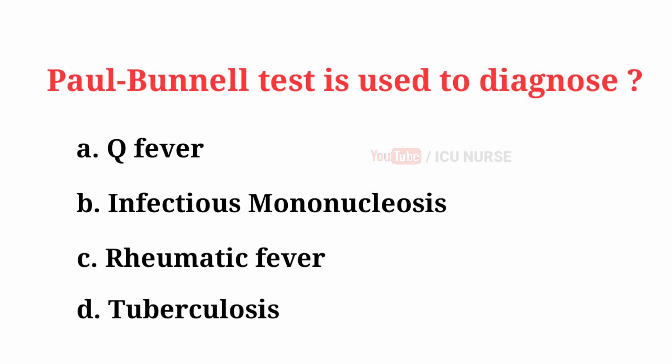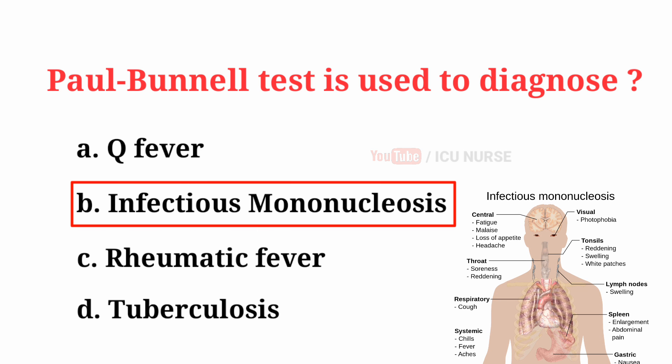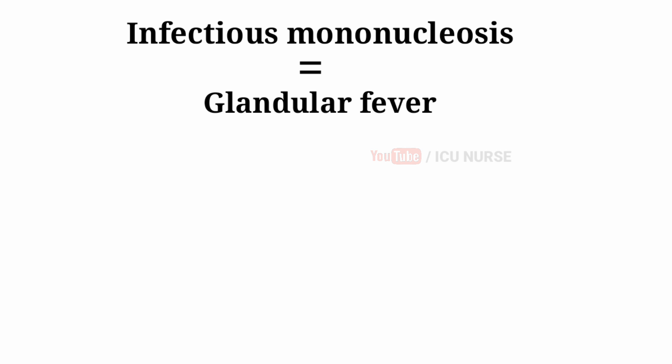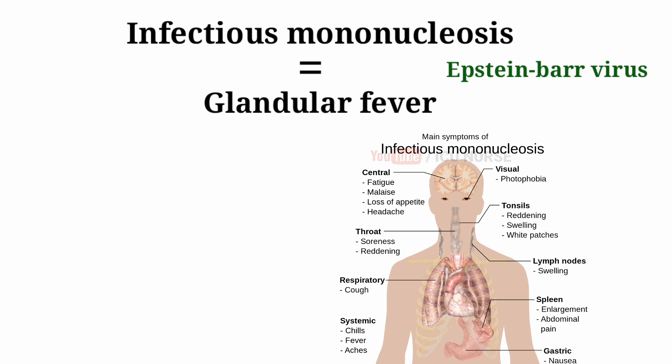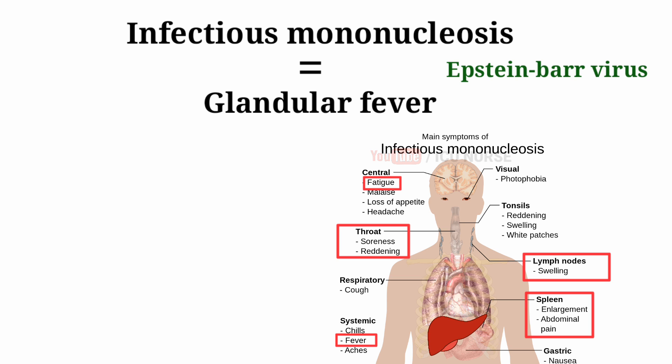The correct answer is B, Infectious mononucleosis. Infectious mononucleosis is also known as glandular fever. It is an infection usually caused by the Epstein-Barr virus. In young adults, the disease often results in fever, sore throat, enlarged lymph nodes in the neck, and tiredness. The liver or spleen may also become swollen, and in less than 1% of cases, splenic rupture may occur.